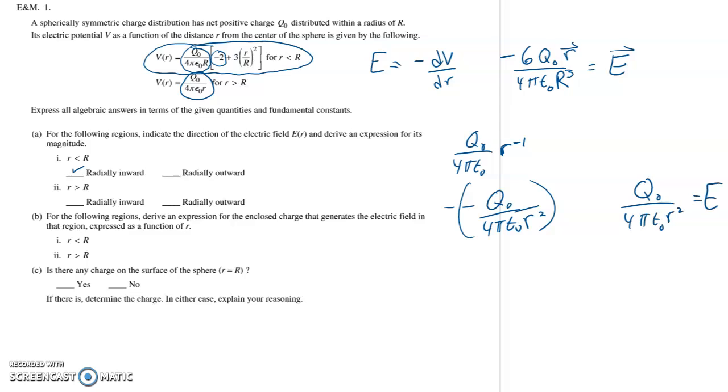And that's a very familiar equation. That's the electric field due to a point or spherical charge. And since it is positive, that means that the electric field points in the same direction as the radius. So the answer to that is radially outward. Okay, so now what do we have to do next? For the following region is to derive an expression for the enclosed charge that generates the electric field in that region.